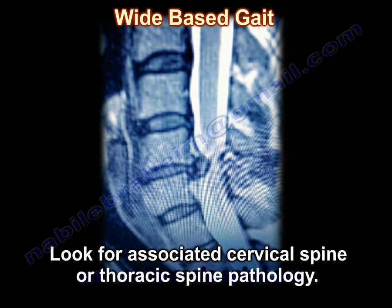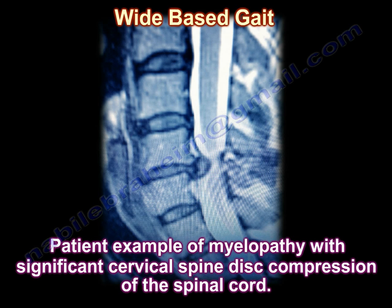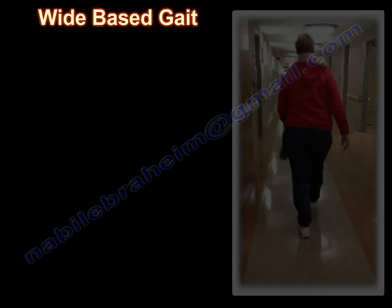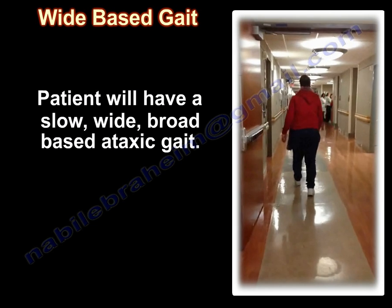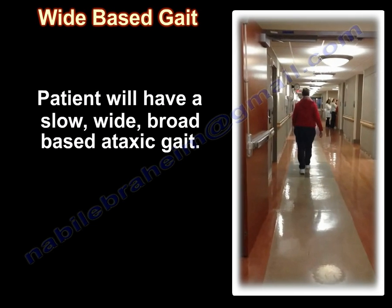Look for associated cervical spine or thoracic spine pathology. Here is a patient example of myelopathy with significant cervical spine decompression of the spinal cord. The patient will have a slow, wide, broad-based ataxic gait.